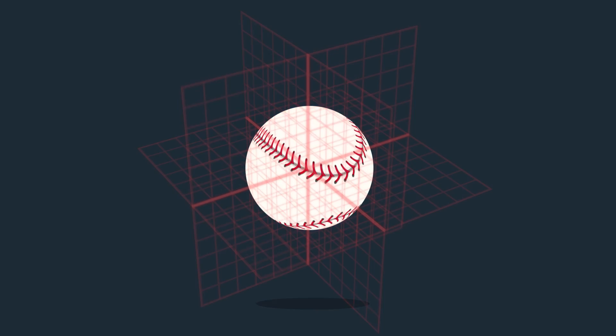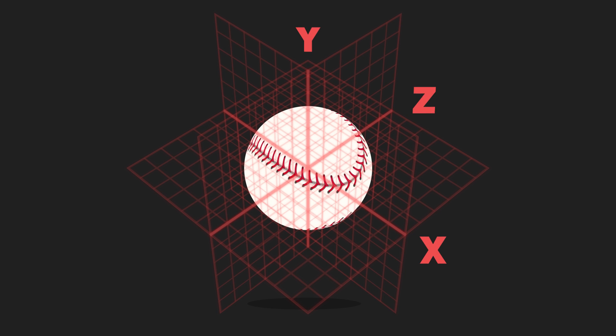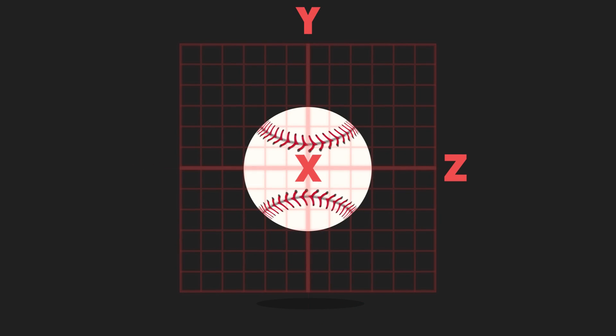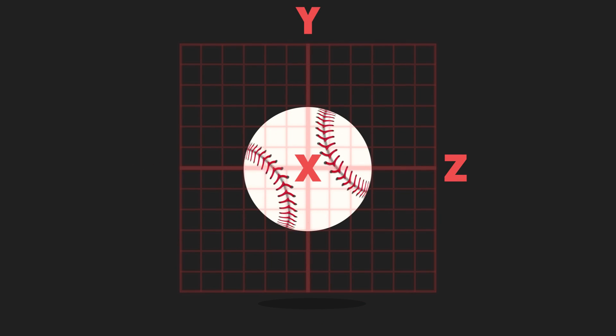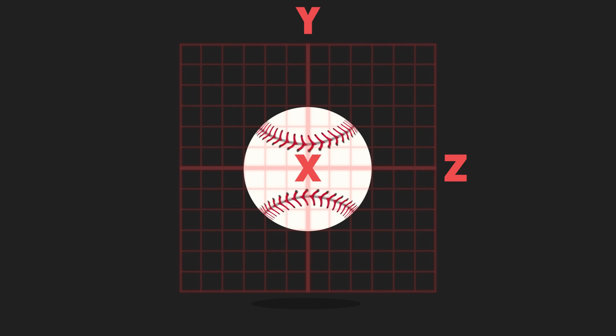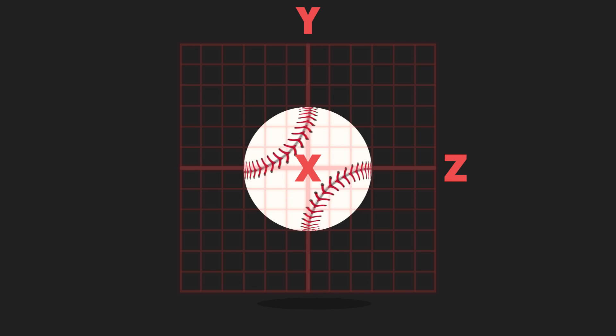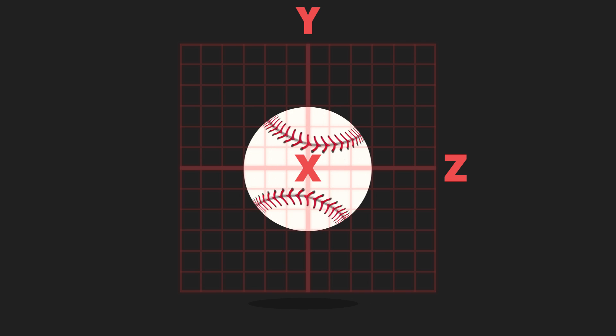There are three axes a ball can spin on: the X, Y, and Z. A topspin is when the ball rolls forward on the X axis. A backspin is when the ball rolls backwards on the X axis.